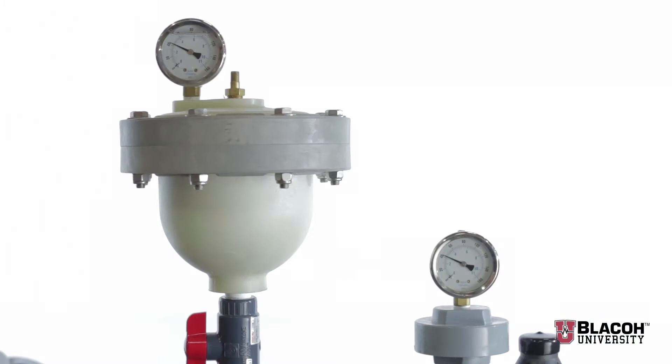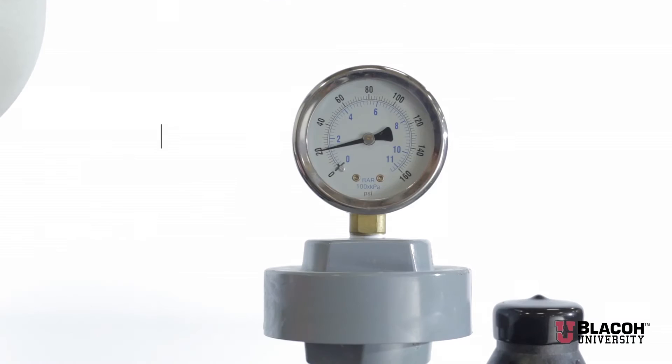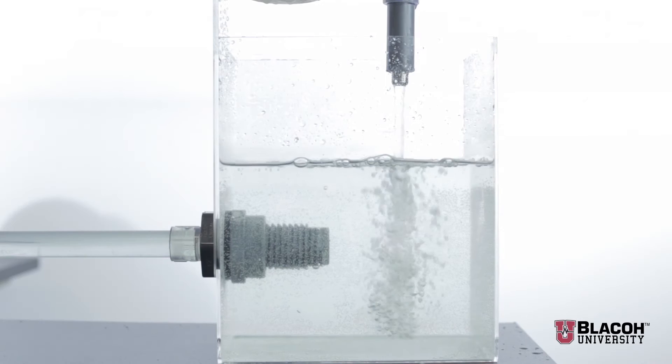And again, as we deactivate the dampener, you will see the pulsation and the wide variation in pressure. Activating the dampener again immediately smooths the flow and eliminates the wild pressure swings.